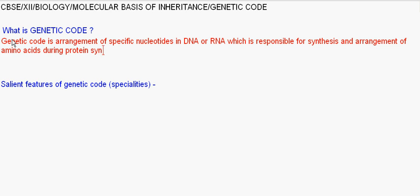So basically in simple words, genetic code is arrangement of nucleotides in DNA or RNA. This decides arrangement of amino acids during protein synthesis, and it is universal.